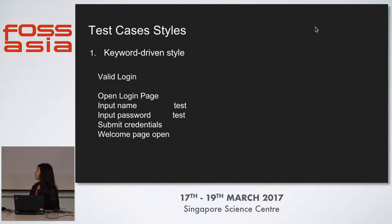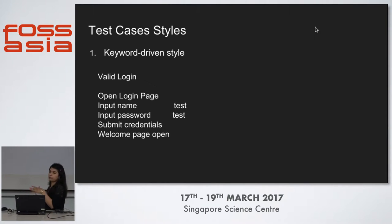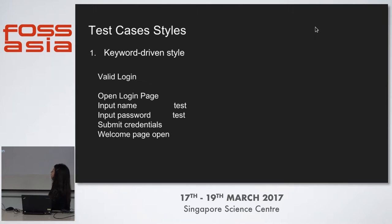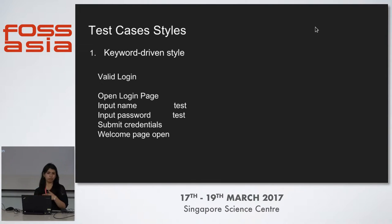Let's discuss the test case styles in which we can write our test cases. The first is keyword driven style — a simple style where we use keywords with arguments. For example, to test a login page, the keyword driven approach would be: open the login page, input the username, input the password — these are the keywords, and the values are the arguments. We open the page, give the username and password, submit the credentials, then the webpage should be logged in. If the test passes, we get a report in HTML format.